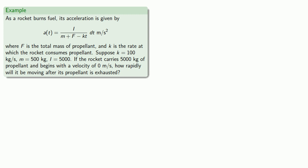As a rocket burns fuel, its acceleration is given by the following formula, where F is the total mass of propellant, and K is the rate at which the rocket consumes propellant. I is another constant that has to do with the efficiency of the propellant.